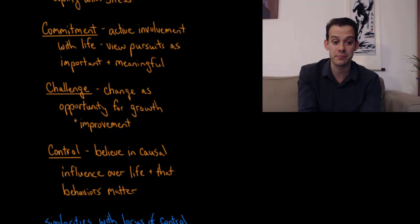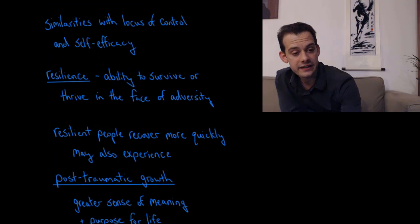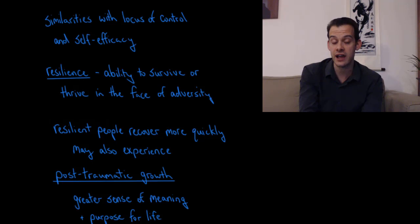And lastly, they show a sense of control. This is something we've talked about in previous videos. This is a belief that they have causal influence over their life, that their behaviors actually matter in influencing the outcomes that occur. Now we have a lot of overlap with this idea of coping and Julian Rotter's ideas of locus of control and Albert Bandura's ideas about self-efficacy that I talked about in the unit on personality.